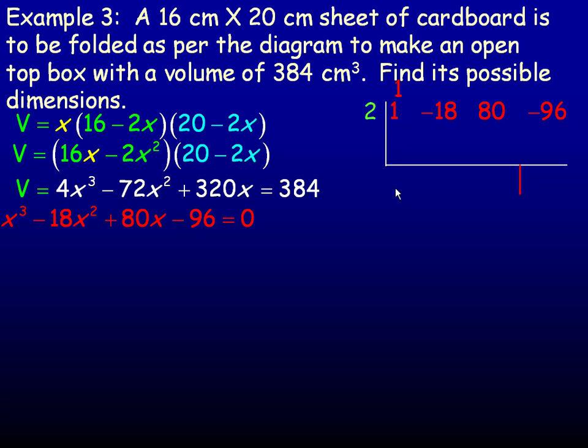And so we bring the 1 down. 1 times 2 is, of course, 2. So we put a 2 here below the negative 18. Negative 18 and 2 add to negative 16. And negative 16 times 2 is negative 32. Added to the 80 is 48. And 48 multiplied by 2 is positive 96. Which of course adds to 0 with a negative 96. So we've got a 0 remainder.